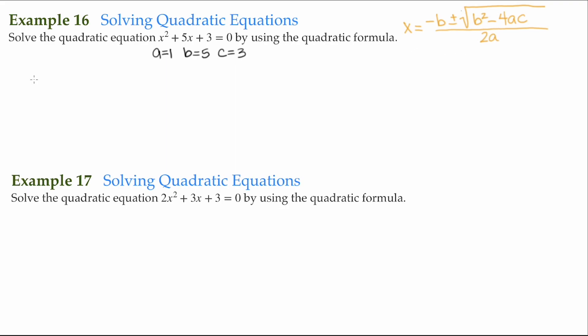So, now using the quadratic formula, x is equal to negative b, which is going to be negative 5, plus or minus the square root of b squared, or 5 squared, minus 4 times a, which is 1, times c, which is 3, all over 2a, which is 2 times 1.